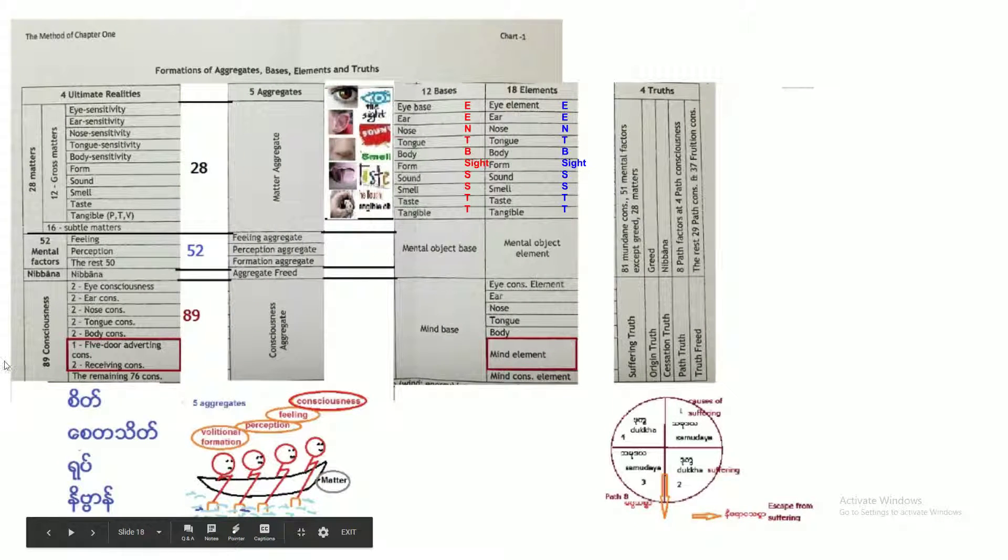Let's look in this chart. Four ultimate realities are consciousness, mental factors, matter and nibbana. I will explain a little bit about this matter today in this lecture. Twenty-eight matters. There are four great elements. The ground contains earth element, fire element, water and air elements in it. Another sixteen subtle matters I will explain to you later. So total 28 matters are classified into the matter aggregate.